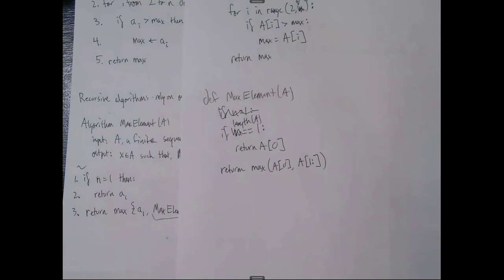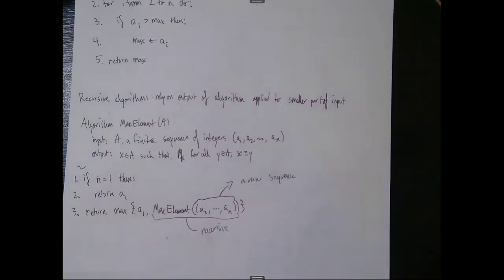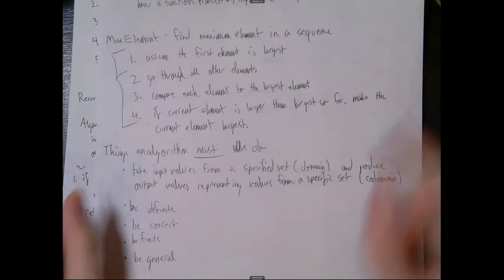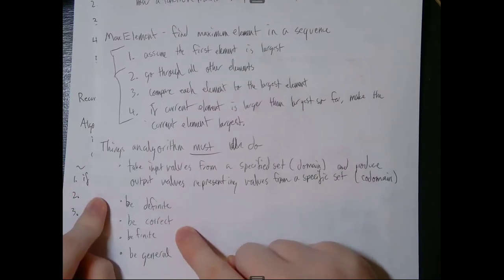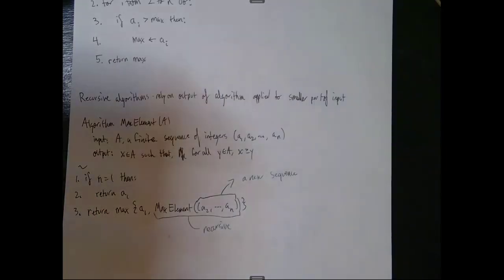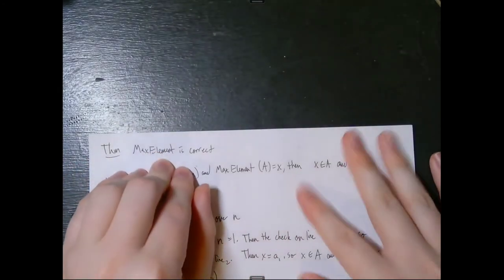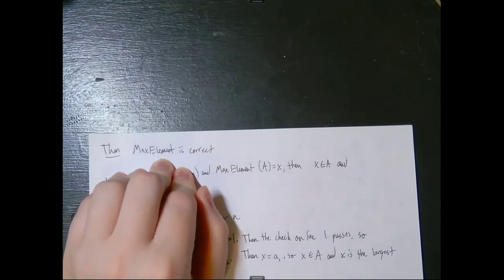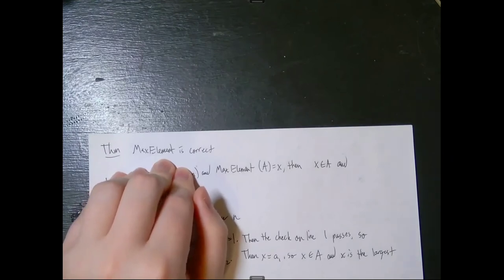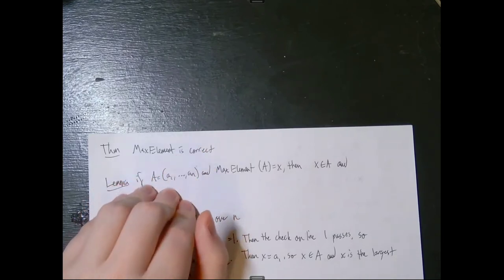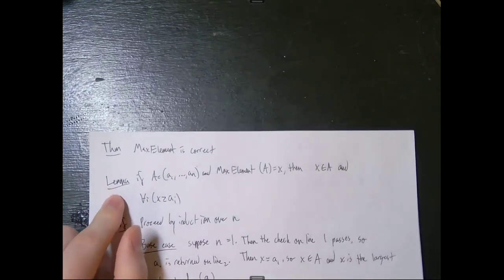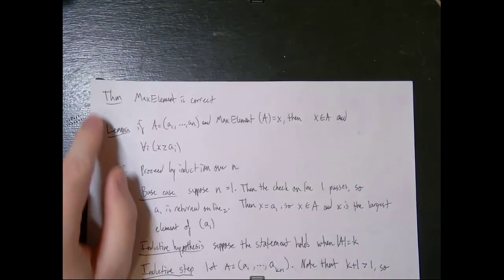So we have a recursive algorithm, but one of the most important things — we talked about it in things an algorithm must do — is that an algorithm must be correct. How do we know when an algorithm is correct? In the case of max element, it's correct if for our sequence a it gives us the largest value. In order to show that, we're going to need to rely on a lemma that specifies exactly what we need to show. The lemma will be based off of the output statement.